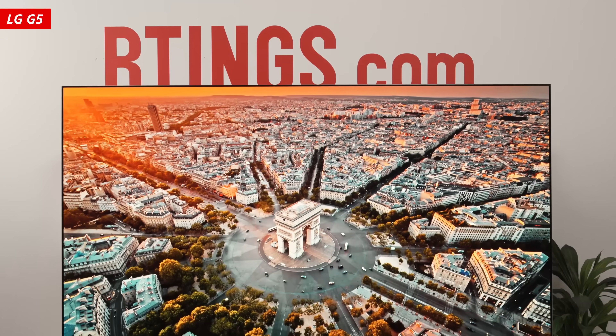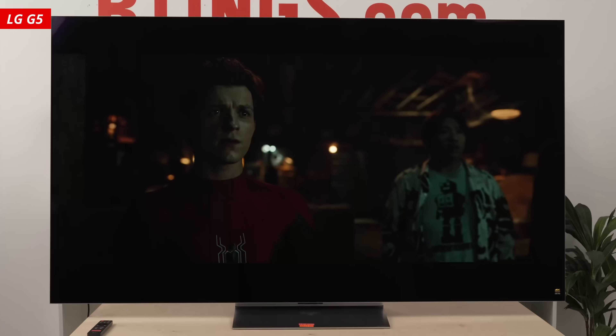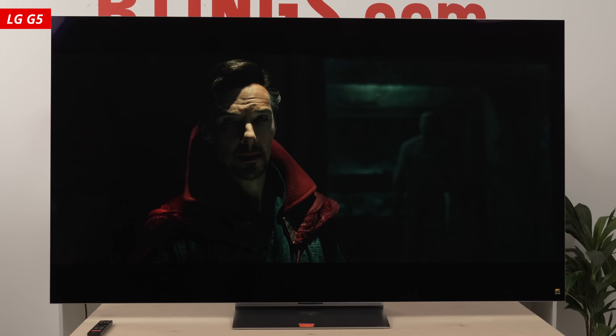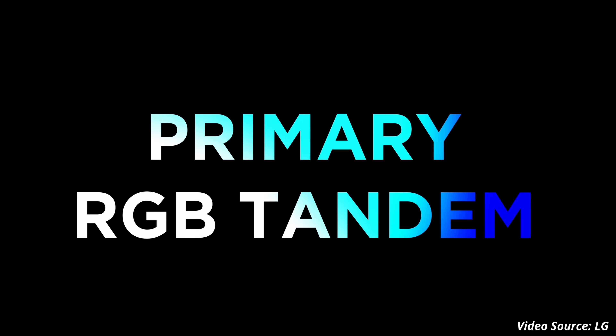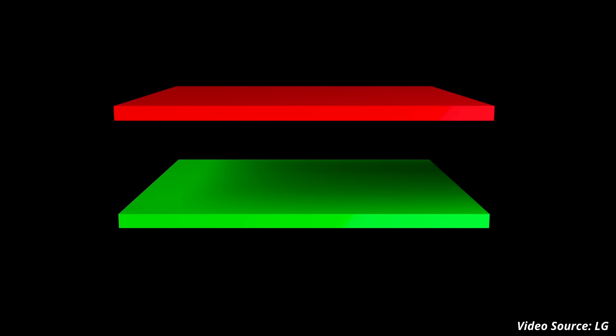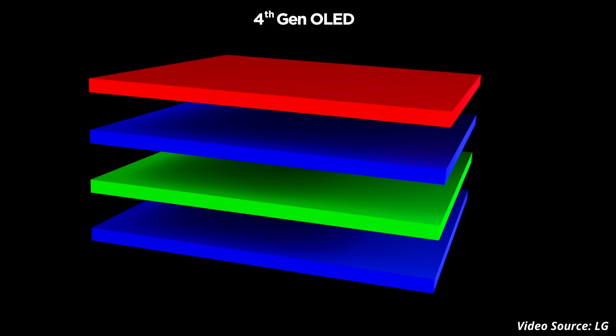Ultimately, there's always a trade-off, and manufacturers are placing a bet on what matters most — increased light output and brightness, or maintaining black levels in ambient light. That is, until the LG G5 came along. It basically solves the efficiency and light output issues of older W OLEDs without compromising on black levels in ambient light. That's because it features the latest innovation on the W OLED formula: LG's new primary RGB tandem panel. Previous generation W OLEDs feature a three-stacked OLED panel design, with a yellow layer sandwiched between two blue layers.